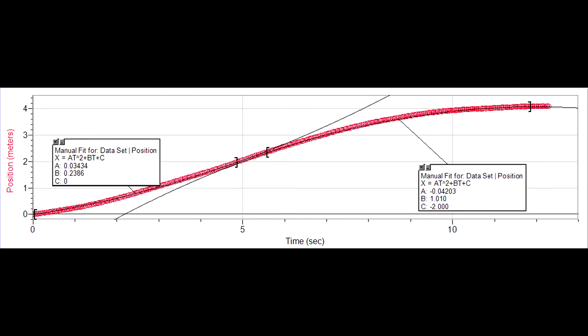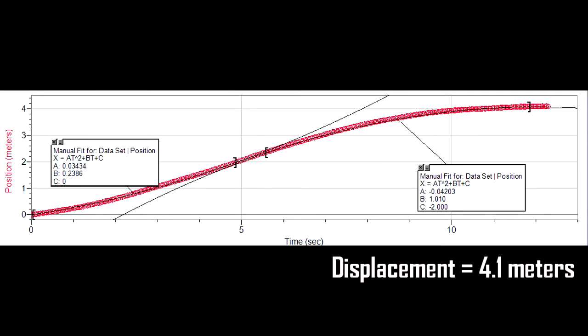This is a position-time graph that we got from tracking the car's movement from start to finish using Tracker, which we used to find the displacement, which is 4.1 meters. That is basically how far the car went in total time.